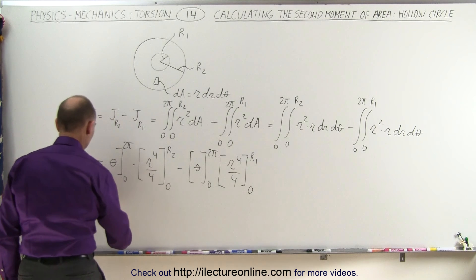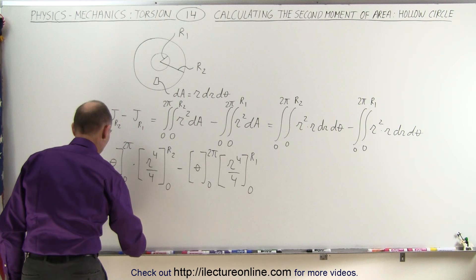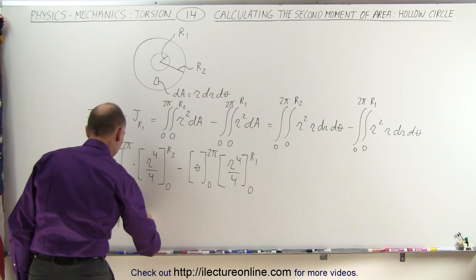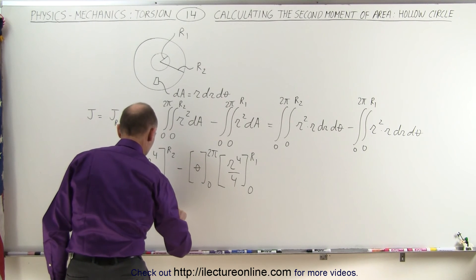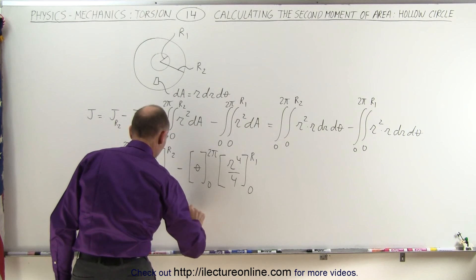So what this ends up being, this is equal to 2 pi divided by 4, bring the 4 out, times, when we plug in the upper limit, we get R2 to the fourth, subtract from that, here we get 2 pi divided by 4 times R sub 1 to the fourth power.